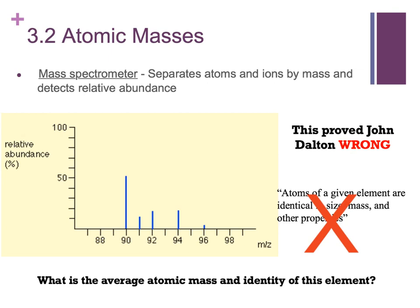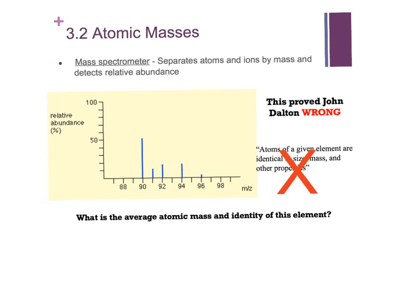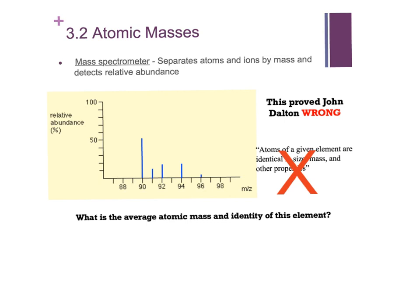If protons and neutrons each weigh one unit, one AMU, how do we have decimals on the periodic table? Well, the reason is because these are averages. So we get a little hit counter here, which I said was just a bar graph.